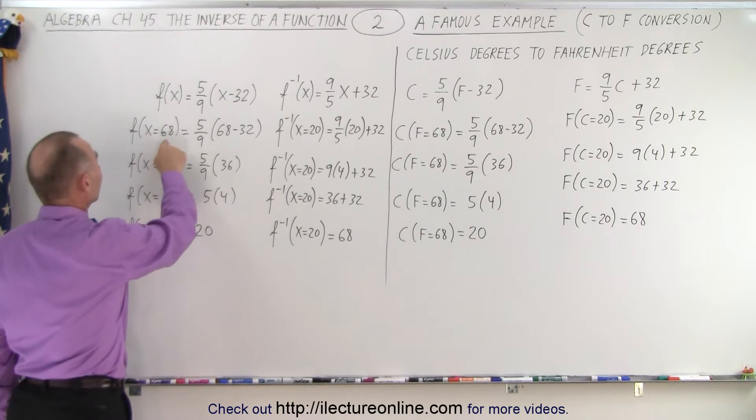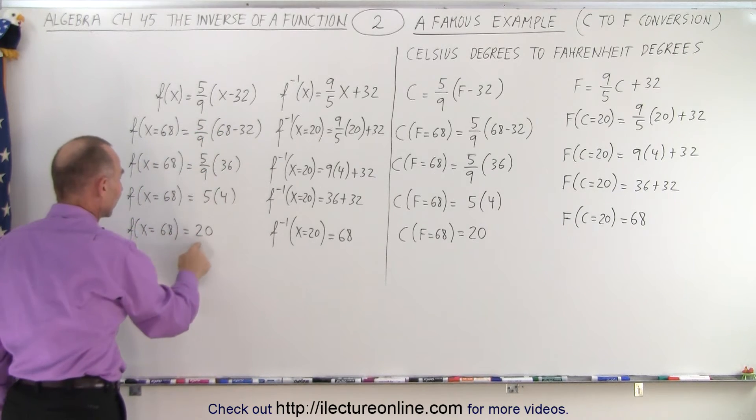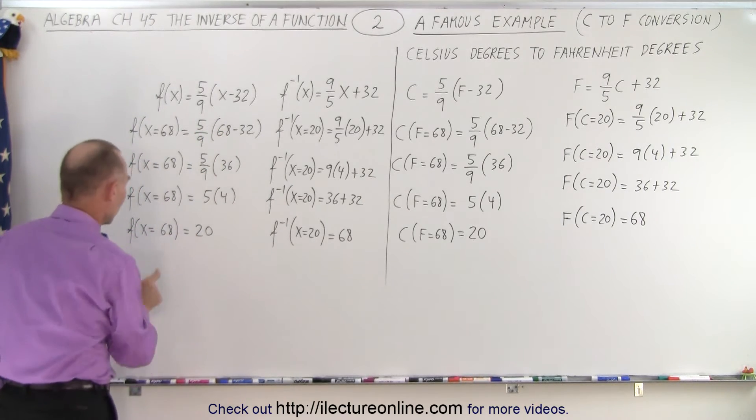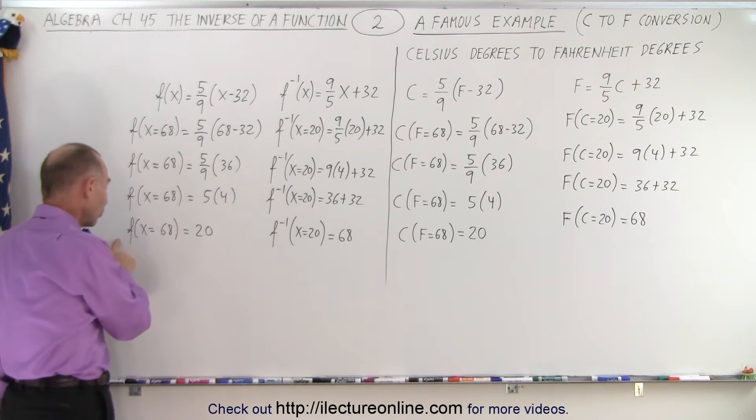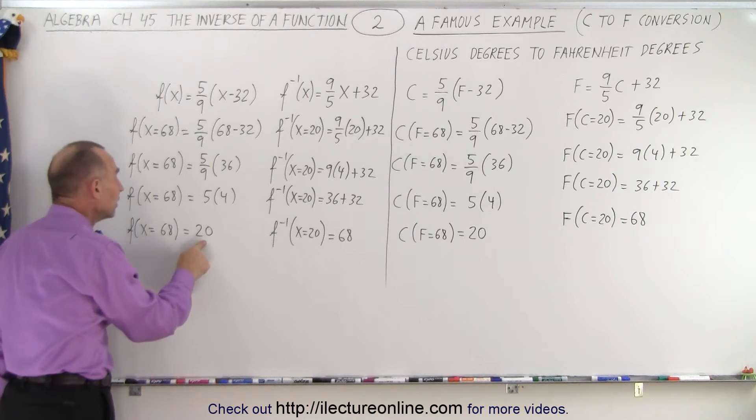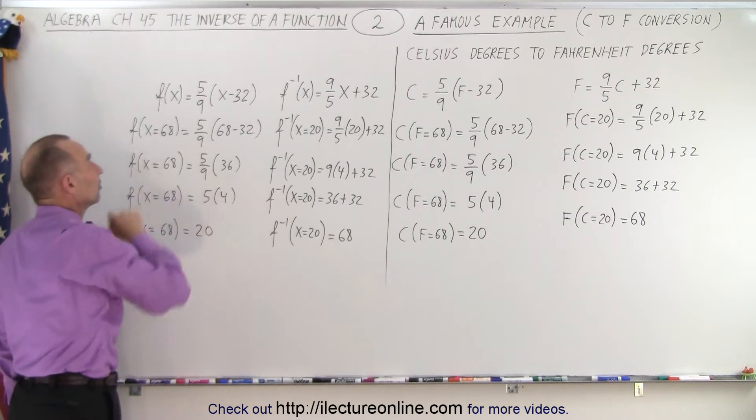We plug in x equals 68. We go through the same calculation and we get 20. So f(x) equals 68 essentially means the temperature in Celsius degrees is 20 when the temperature in Fahrenheit degrees is 68.